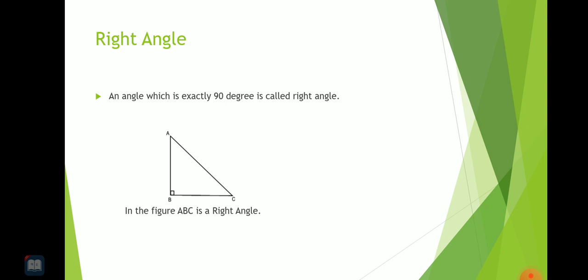So in the figure, ABC is a right angle. Here we have to write this and draw this picture with pencil.